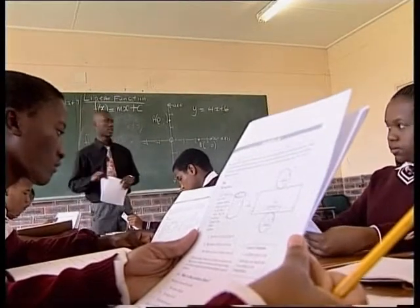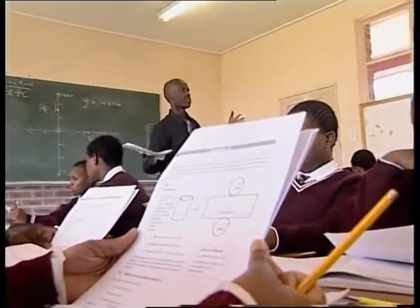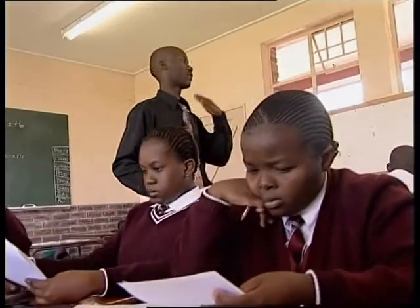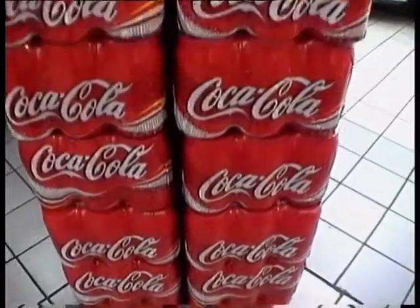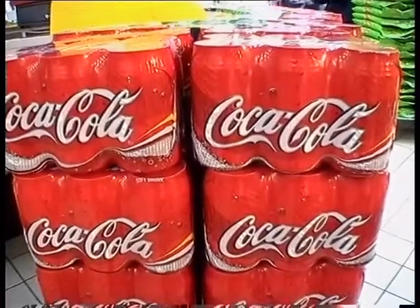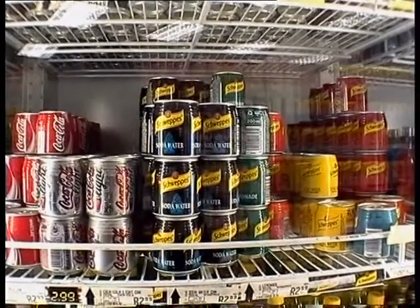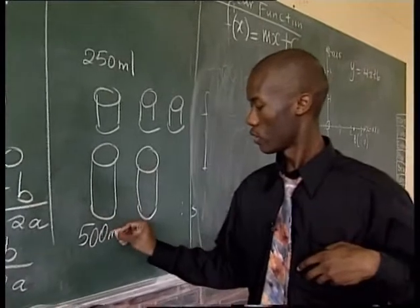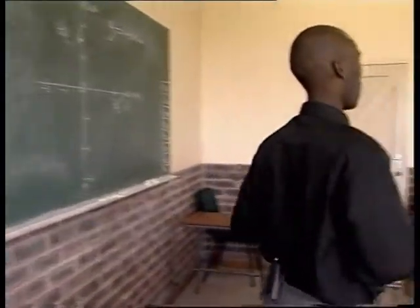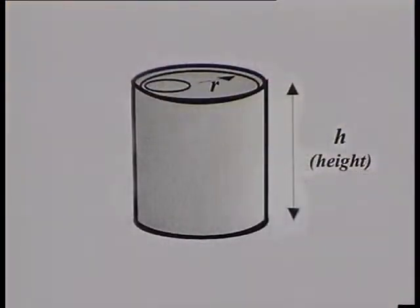Calculus is widely used to work out minimum and maximum quantities in real-life situations. This activity shows learners how this is done when a can is designed to hold a specific volume of a drink. A new cool drink company is offering high-energy drinks in three sizes: Mini Boost in a 250 ml can, Medi Boost in a 500 ml can, and Maxi Boost in a 1-litre can. Assuming the basic design is a cylinder, learners have to determine the radius and height of each can to use the minimum quantity of aluminium.